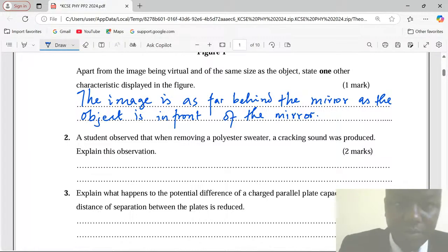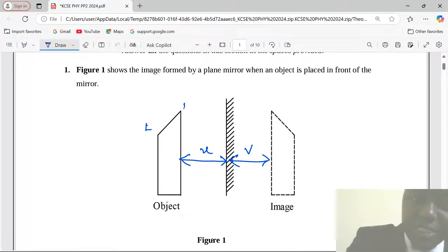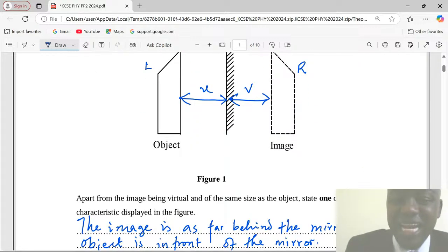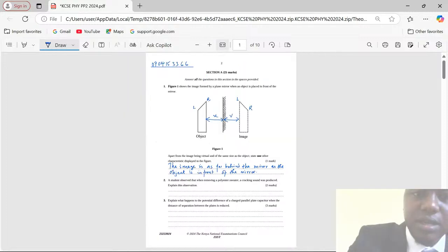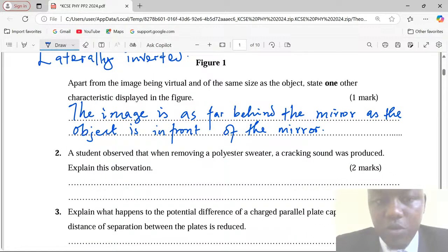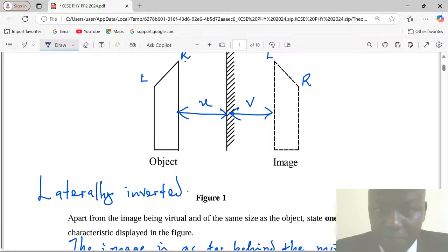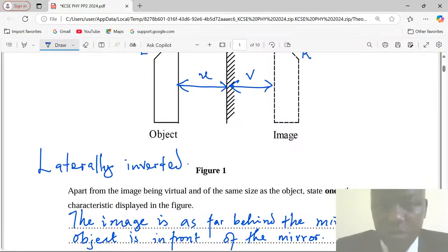That is the first property that we can notice. Remember the properties are many. We can still see that if this is left and this is right for the object, we can see that for the image, whatever was right now is here on the left and whatever was left now is here on the right. From this we can see that the image is laterally inverted. It is virtual.